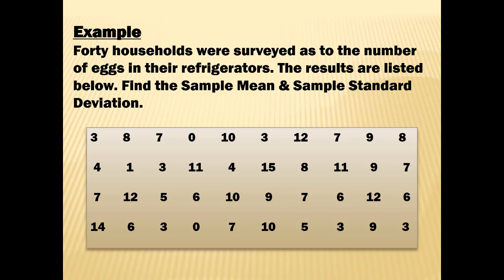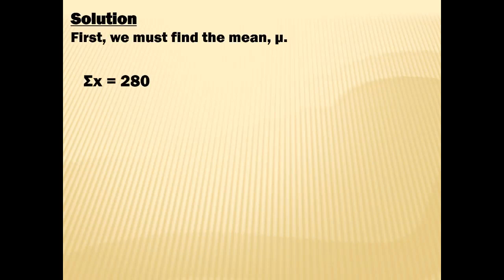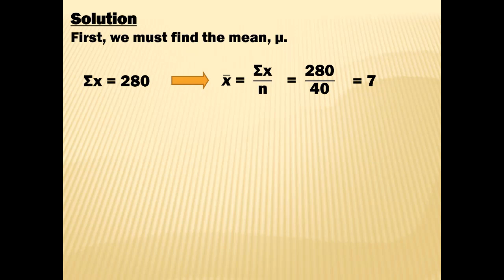You'll notice several repeated values. For instance, there are six 7s in the data. Why find that particular deviation six different times? Just find the deviation once, square it once, and multiply by 6. To find the mean: add up all the data values — they sum to 280 — and divide by 40. So 280 divided by 40 is 7: we have an average of 7 eggs per refrigerator.